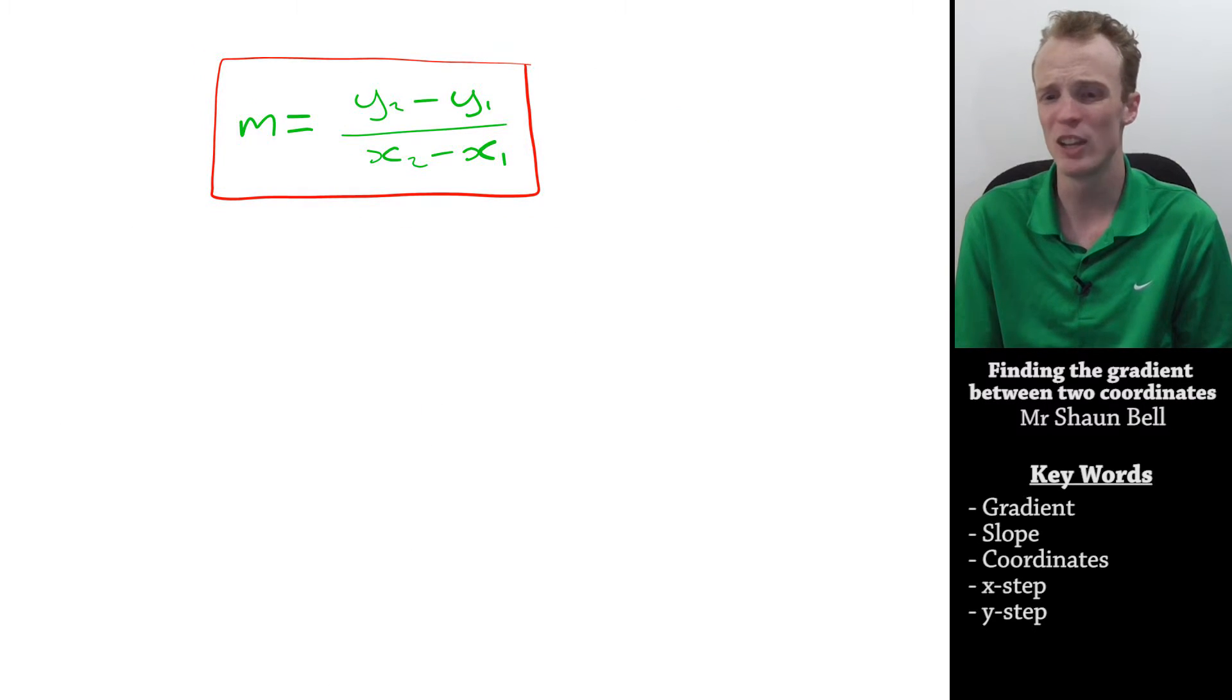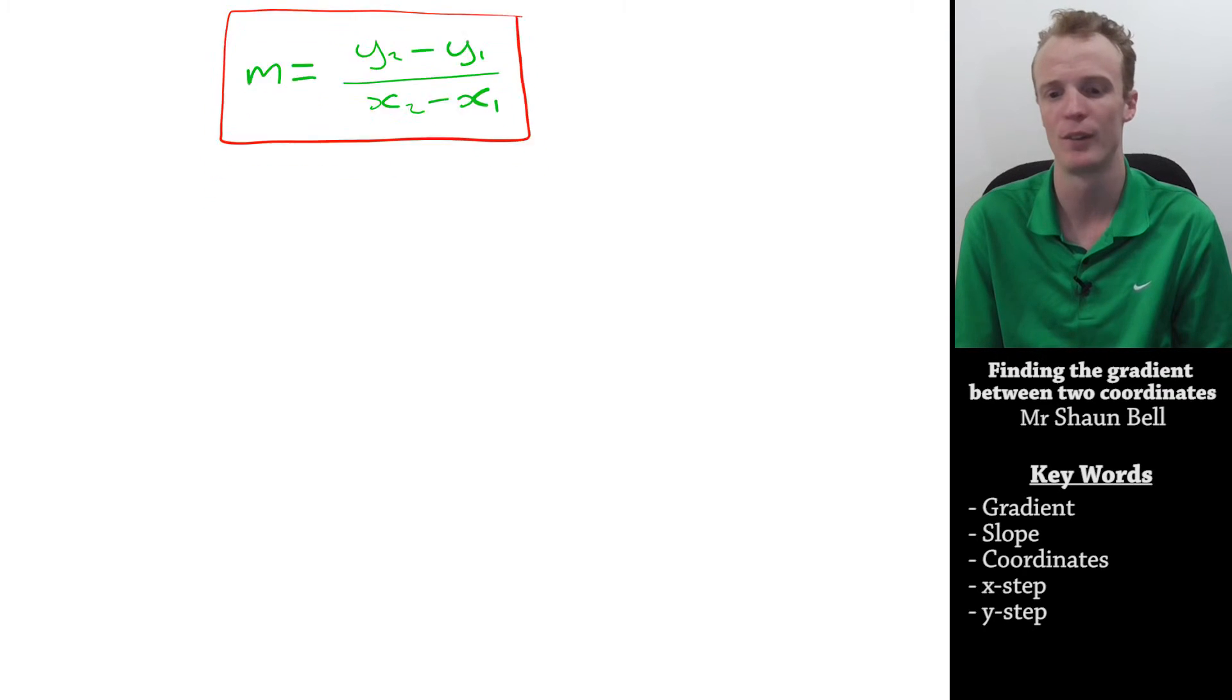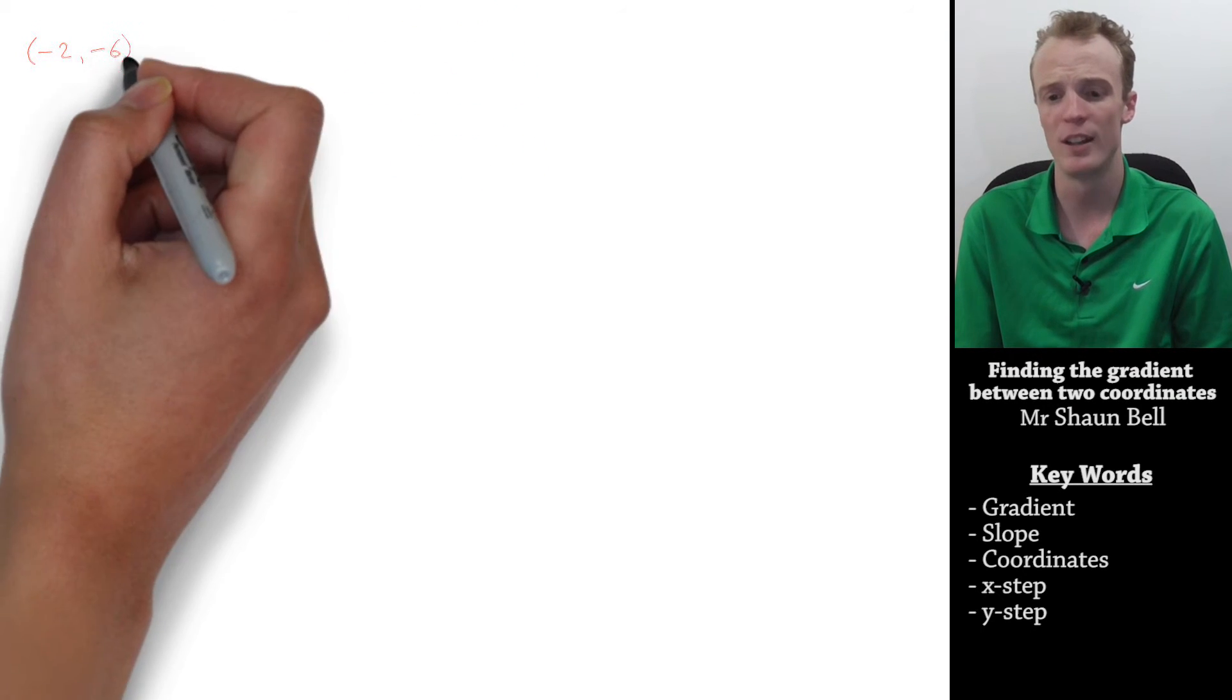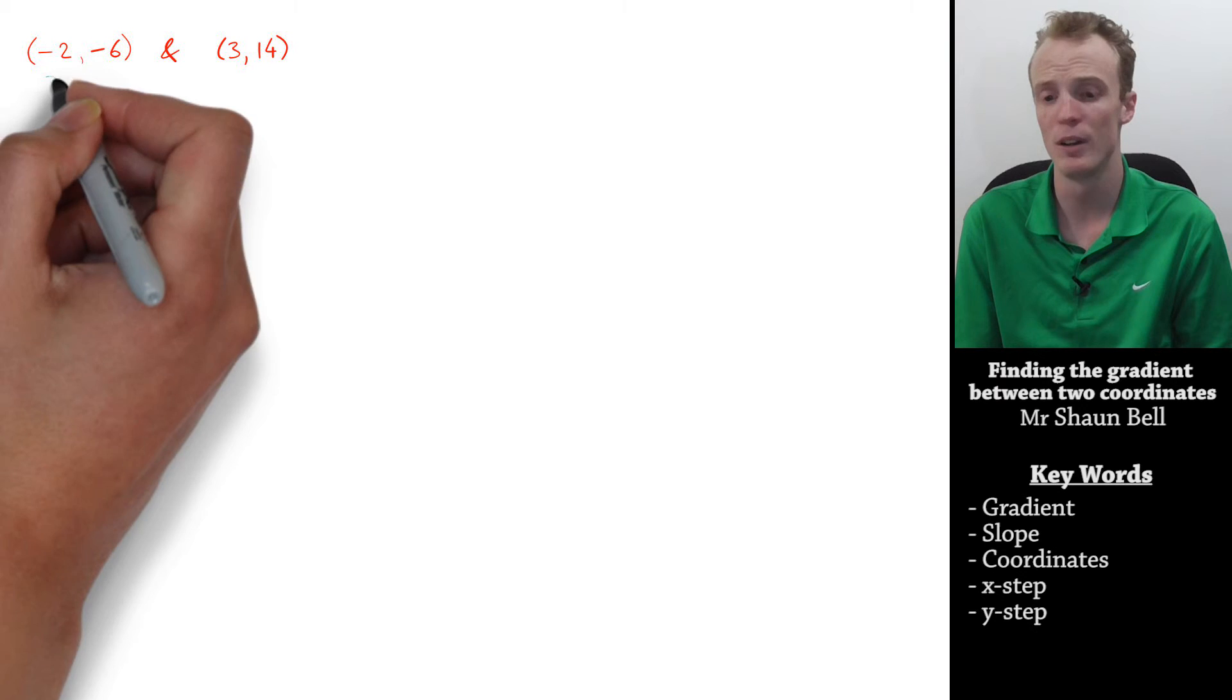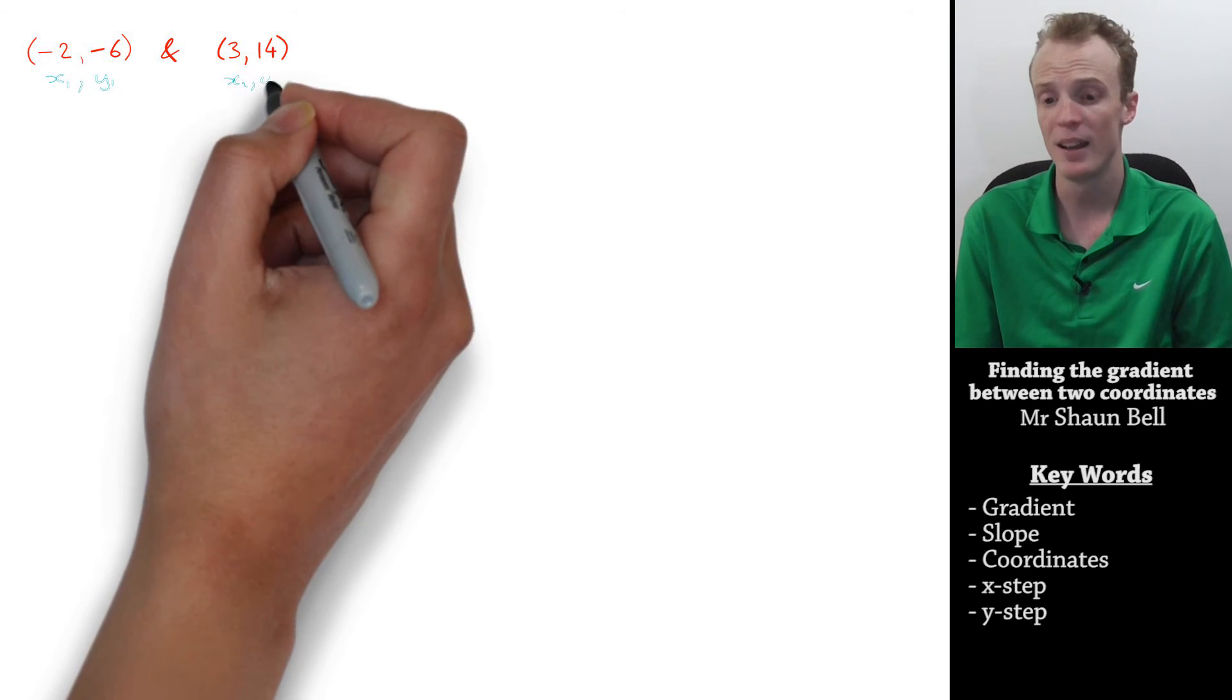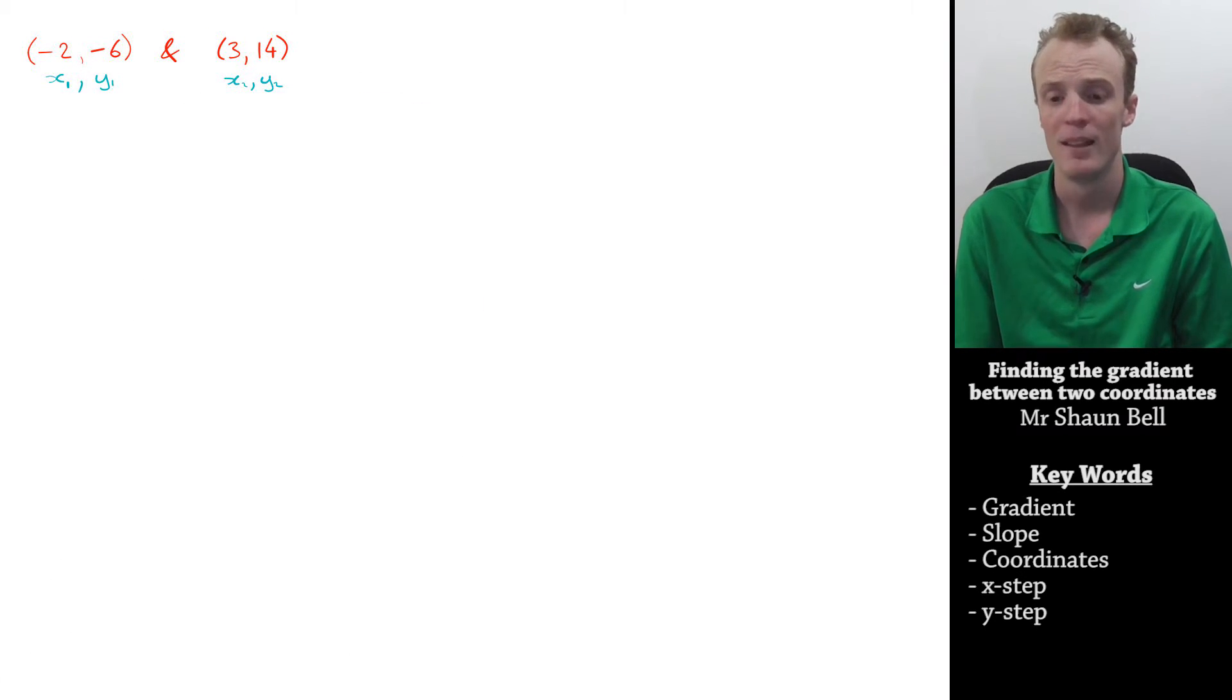But, let's check out another coordinate pair and see how this works. Here we've got the coordinates negative 2, negative 6, and 3, 14. Let's start by labelling our coordinates as x1, y1, and x2, y2.